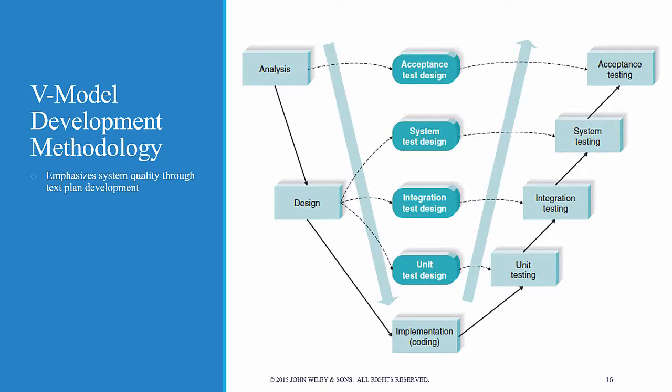A third variant is the so-called V-model development methodology, which puts heavy emphasis on testing and in this way promotes system quality through test plan development. In this visual, the development process proceeds down the left-hand slope of the so-called V, defining requirements and designing system components. At the base of the V, the code is written, and then on the upward-sloping right side of the model, testing of components, integration testing, and finally acceptance testing are performed.